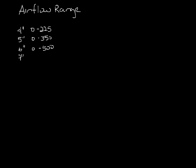Let's start with the primary air inlet. Our catalog shows the airflow range for different inlet sizes. For a 4-inch inlet, the CFM is 0-225. For a 5-inch, 0-350. 6-inch, 0-500. 7-inch, 0-650. 8-inch, 0-900.